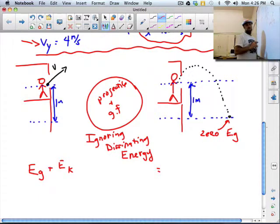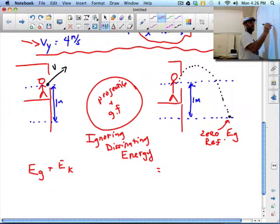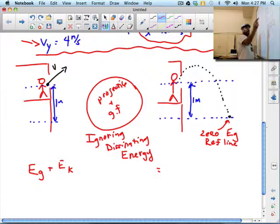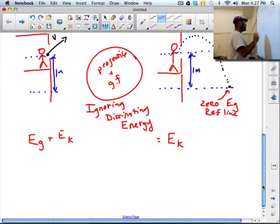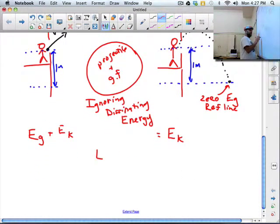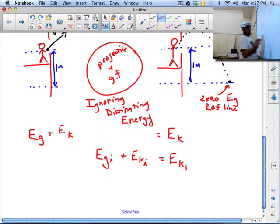In the end, let's make this height here zero EG. It's not on the ground, but we don't care. So I'm going to call that level my zero EG reference line. That is one meter below the height of where the projectile was launched. So I only have EK in the end, right? And so my equation for my energy flow diagram is E gravitational in the beginning, I'll put an I for initial, plus E kinetic initial has to equal my EK in the end.